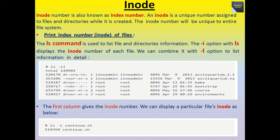Inode number is also known as index number. An inode is a unique number assigned to files and directories when it is created. The inode number will be unique to the entire file system. If we want to print or show the index number of a file, we should use the ls command. The ls command is used to list file and directory information. The minus i option with ls displays the inode number of each file. We can combine it with the minus l option to list information in detail — for example, write 'ls -il'. The first column gives the inode number of the file or directory. We can also display a particular file's inode by writing 'ls -i' followed by the file name.